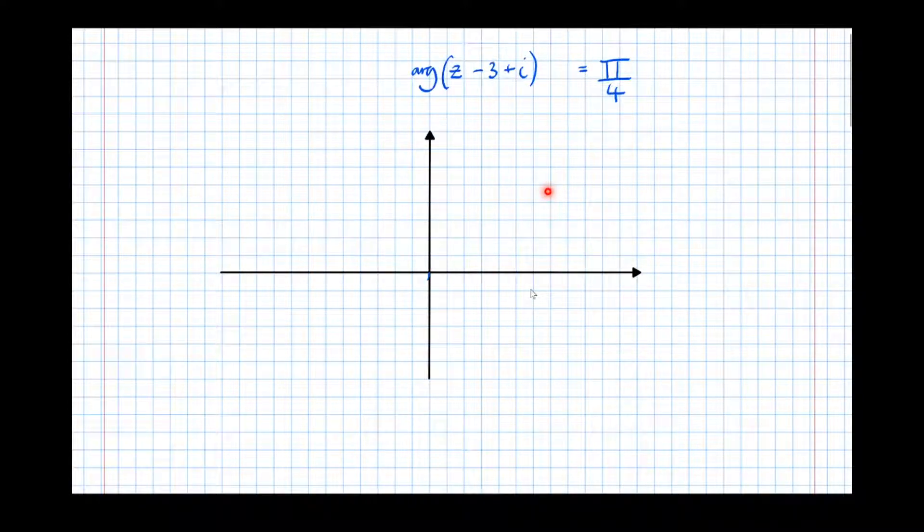But now let's change it a little bit. Let's change the question to the argument of z minus 3 plus i equals pi over 4. We'll start from where we left off. The argument of z is pi over 4, so that's the line. Let's mark that on the diagram: pi over 4.